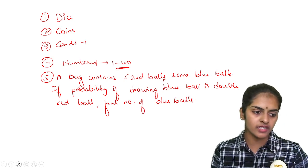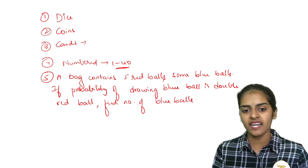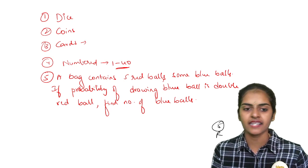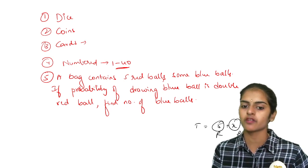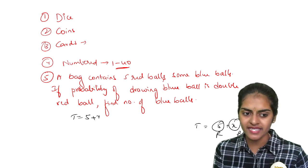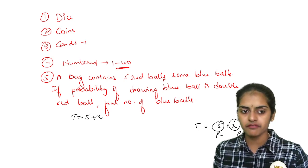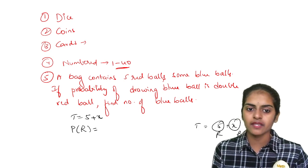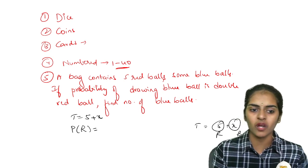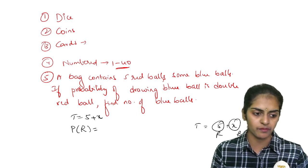How will you solve this question? There are 5 red balls and some x number of blue balls. This will be the total number of outcomes. Total number of outcomes is 5 red plus x number of blue. Out of it, the probability of drawing a blue ball is double the probability of red ball.